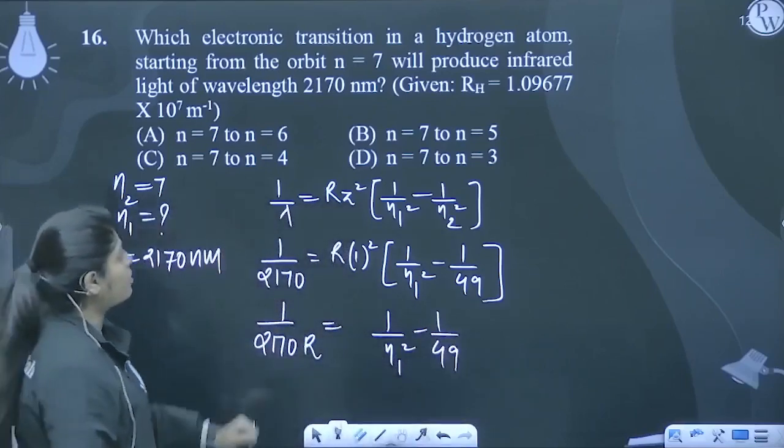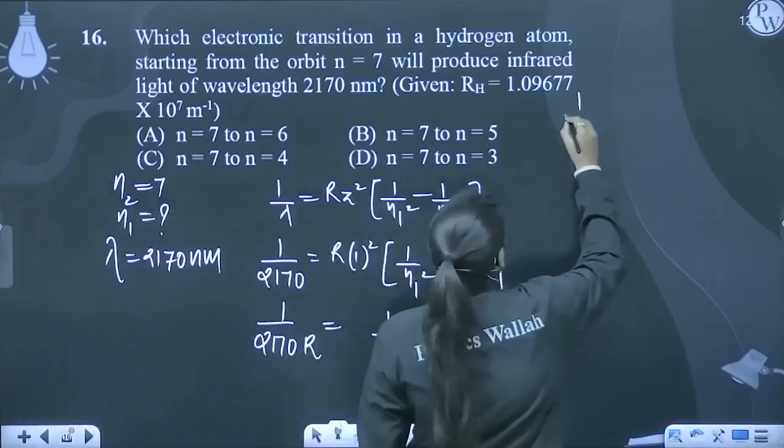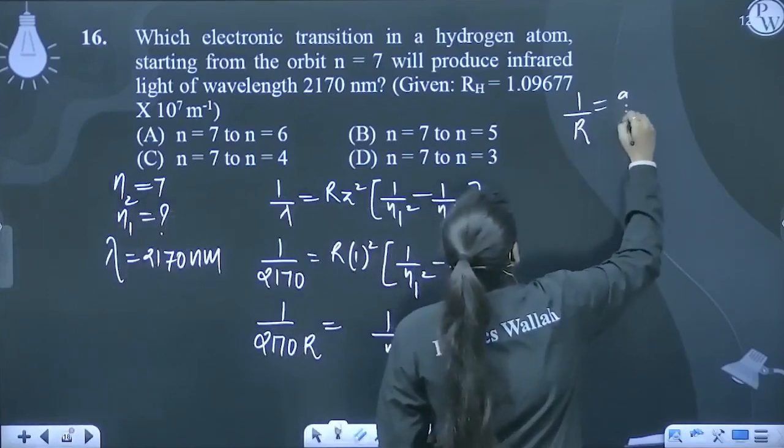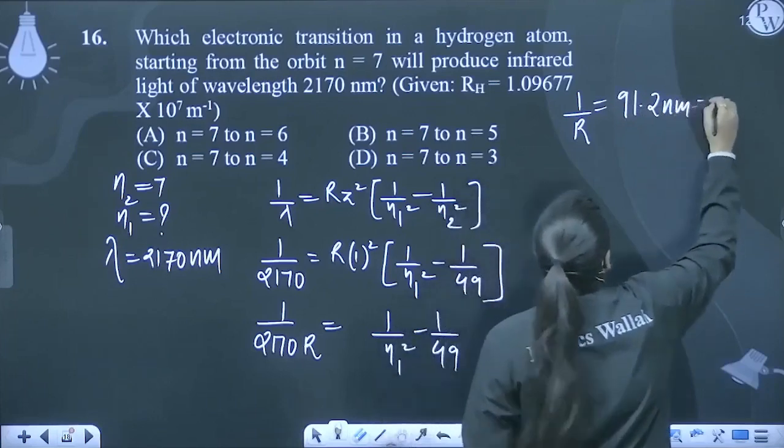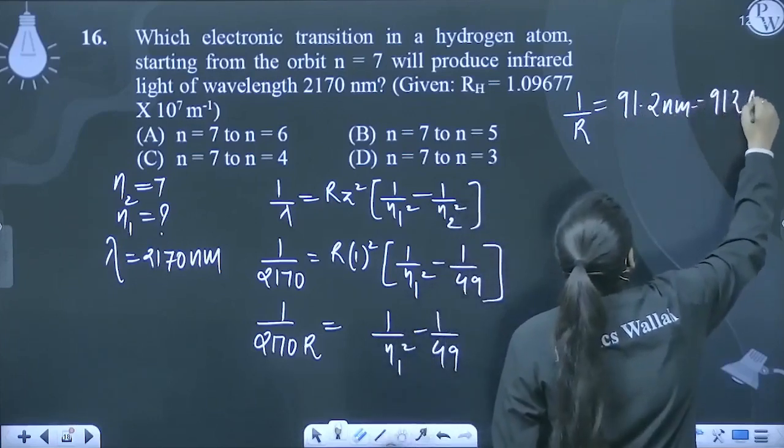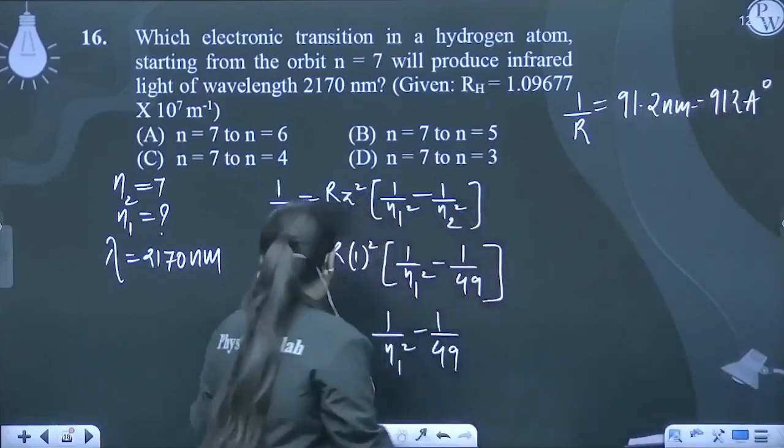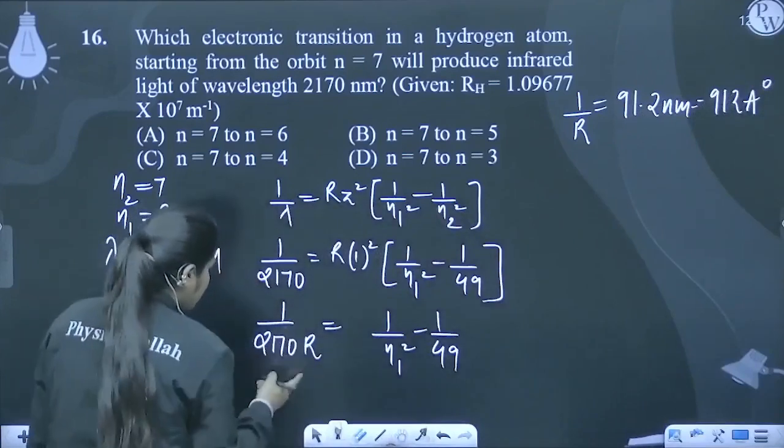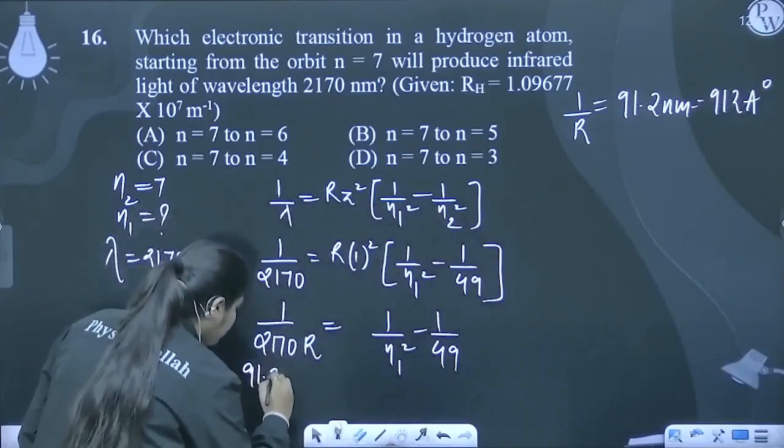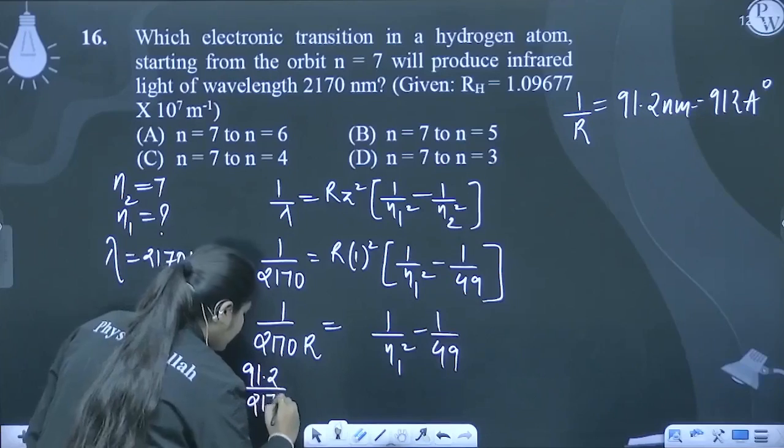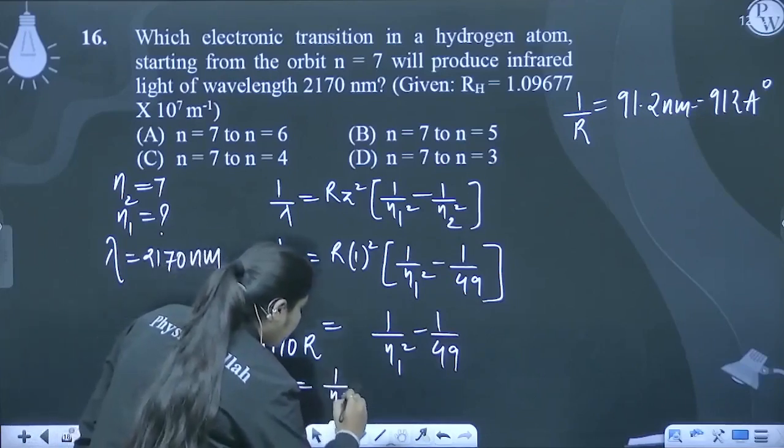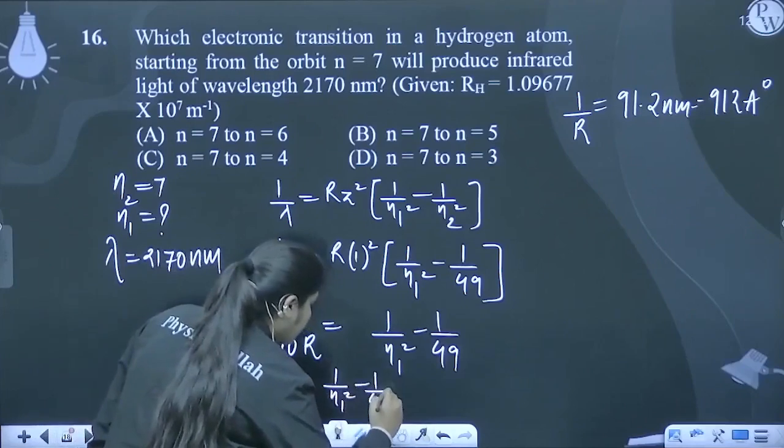1 by R, haun mire kara tha na, 1 by R joh hootah hai, woh kitna hootah hai? 91.2 nanometer, ya isi ko bol saakta hai 912 angstrom. Tho, 1 by R ko mein seedha seedha kya liek sakti ho? 1 by R ko I can write, 91.2 upon 2170 is equal to 1 upon n1 square minus 1 upon 49.